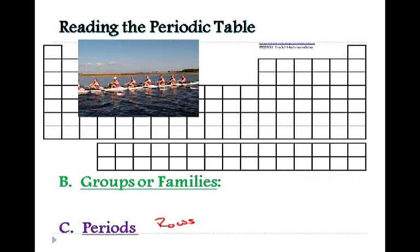However, periods are the rows. So the rows on the periodic table, when you row in a boat, the boat moves horizontally. It doesn't make the boat go up and down, it makes it move horizontally. So as we start on one side and move across, we have a period.